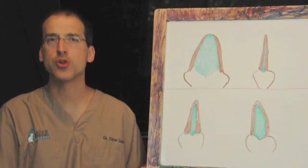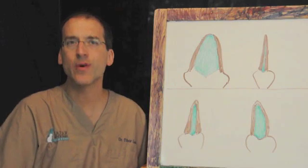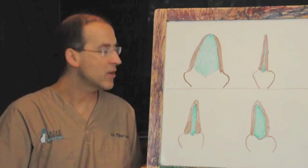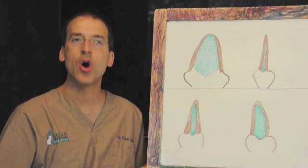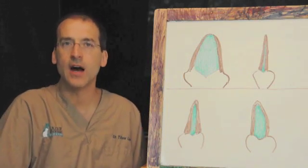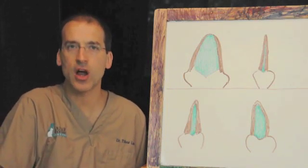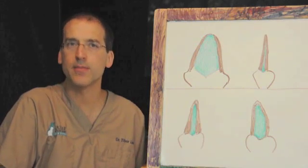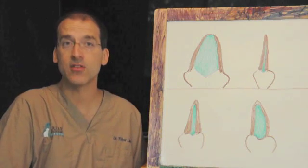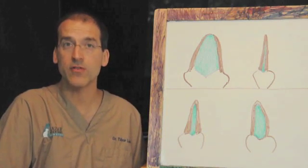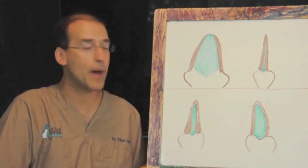So I'll now talk about the surgical procedure. It's called arytenoid lateralization. Arytenoid is the name of the cartilage. Lateralization means opening the cartilage to the side. There have been a number of techniques described over the years but this one has been giving the most consistent good results, getting the dogs to breathe quite well with the fewest complications which I'll talk about later.